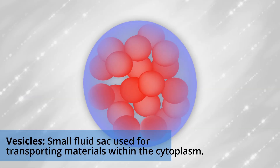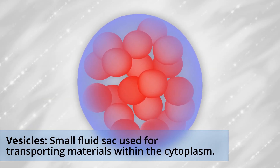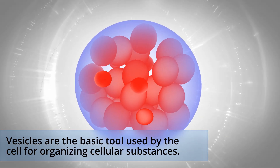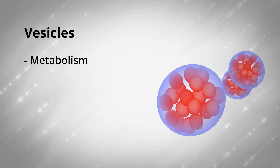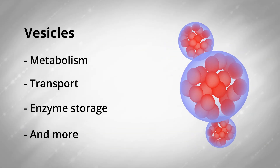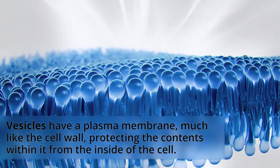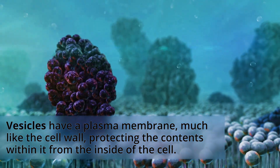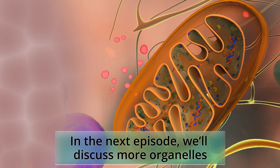A vesicle is a small fluid sac used for transporting materials within the cytoplasm. Vesicles are the basic tool used by the cell for organizing cellular substances. They play a key role in metabolism, transport, enzyme storage, and more. Just like the cell wall, a vesicle has a plasma membrane separating the contents within it from the inside of the cell. In the next episode, we'll discuss more organelles.